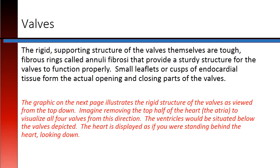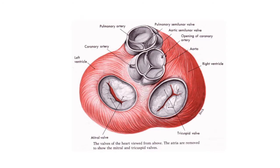The graphic on the next page illustrates the rigid structure of the valves as viewed from the top down. Imagine removing the top half of the heart, or the atria, to visualize all four valves from this direction. The ventricles would be situated below the valves depicted. The heart is displayed as if you were standing behind the heart, looking down. Notice the rigid rings surrounding all four valves — these provide structure. The small leaflets in the middle of each valve are what open and close during each cardiac cycle.